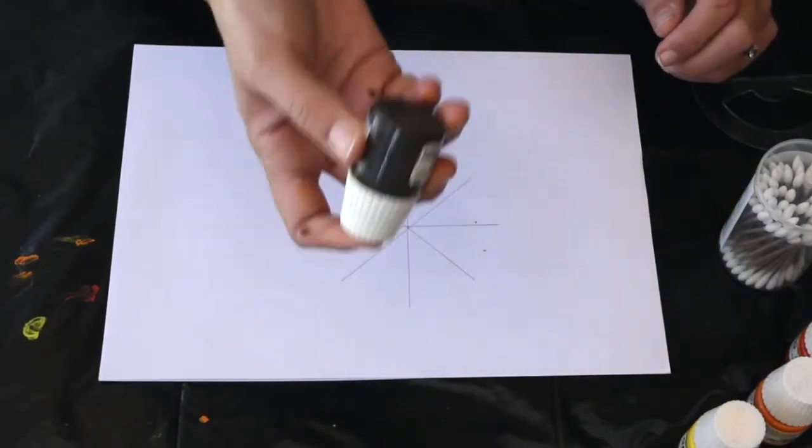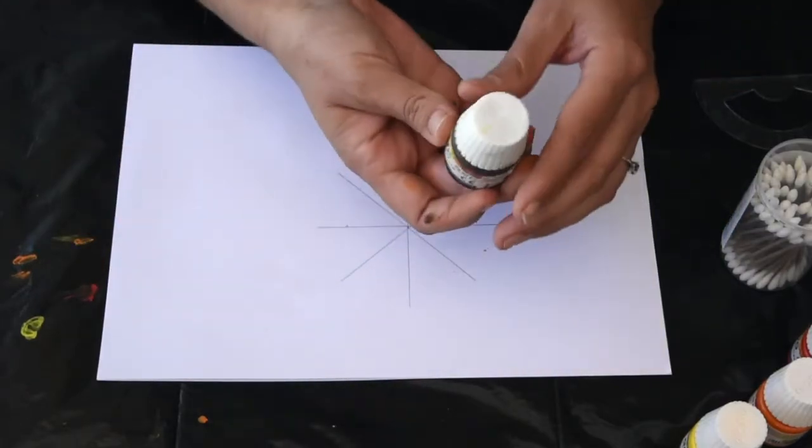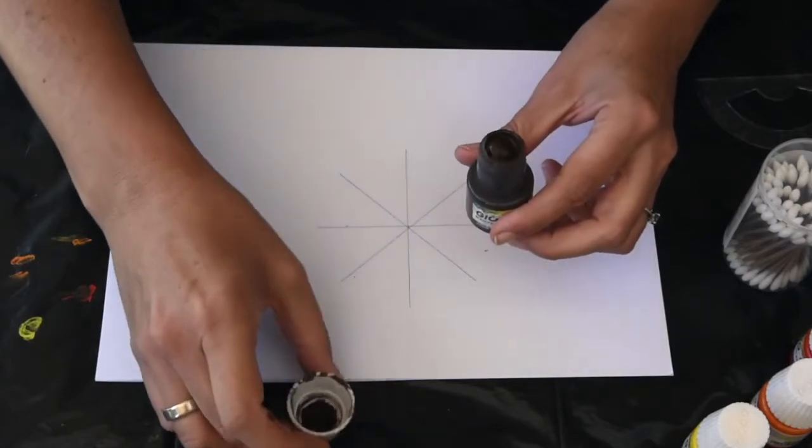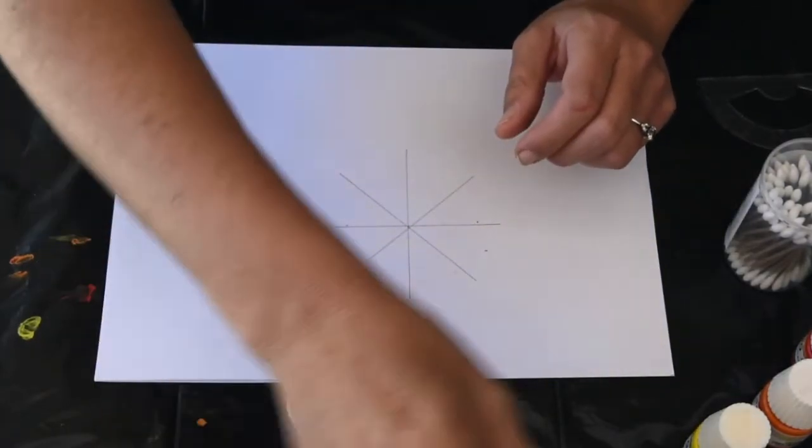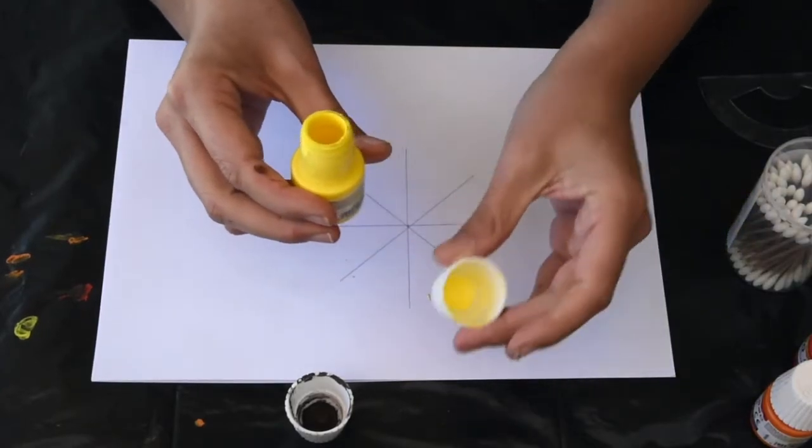Now what we're going to do today is we're going to do some dot painting. I've got some little bottles of paint. I'm turning them upside down so that I can keep the paint in the lid. Put the bottles out of the way. See?